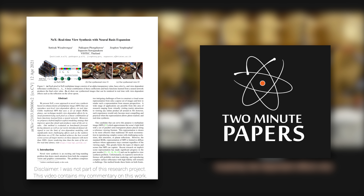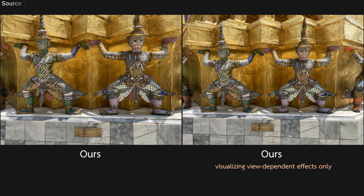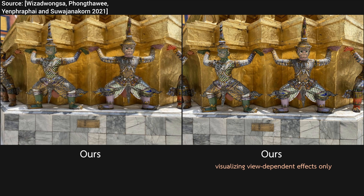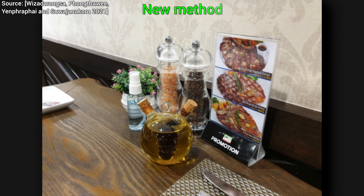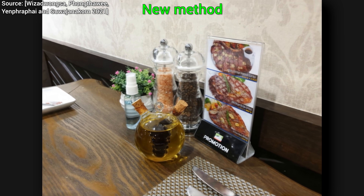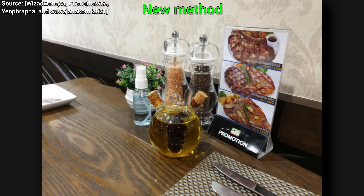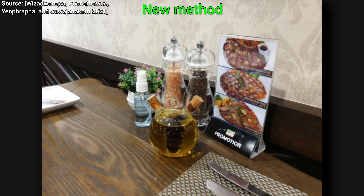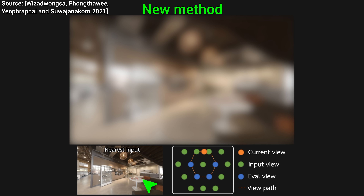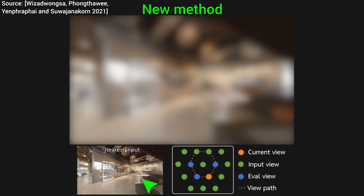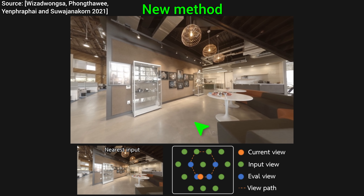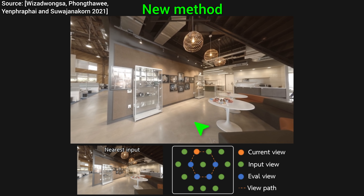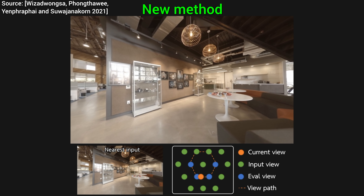Dear Fellow Scholars, this is Two Minute Papers with Dr. Károly Zsolnai-Fehér. Today, we are going to synthesize beautiful and photorealistic shiny objects. This amazing new technique is a NERF variant, which means that it is a learning-based algorithm that tries to reproduce real-world scenes from only a few views. In goes a few photos of a scene, and it has to be able to synthesize new, photorealistic images in between these photos. This is view synthesis in short.